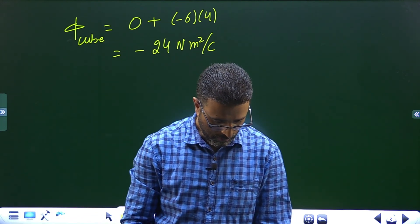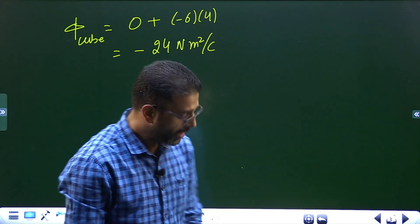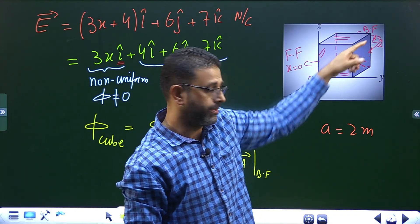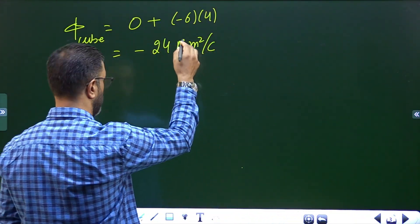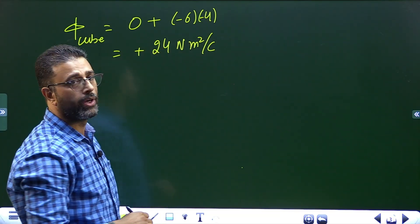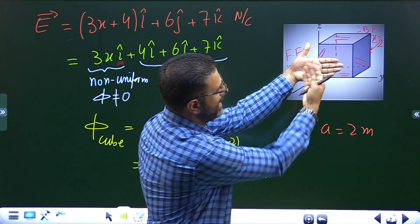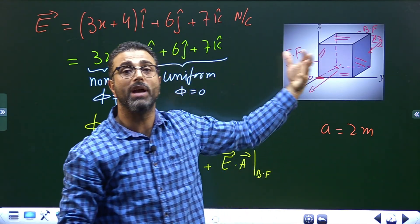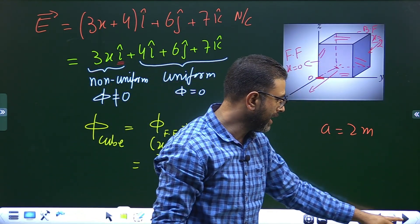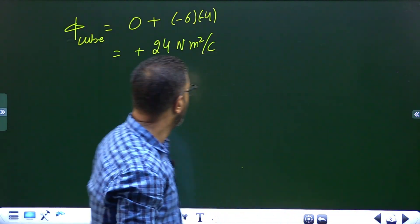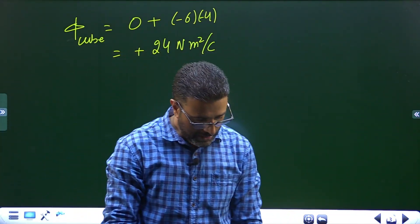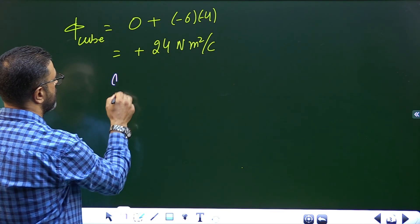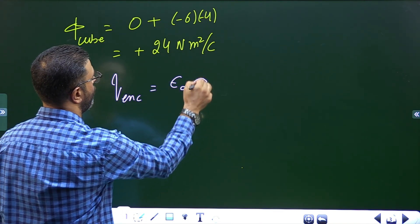Wait — the area vector for the back face points in the negative x-direction (outward normal), so the area is also negative. This gives (-6) × (-4) = +24 N·m²/C. Remember, the outward normal for the back face points in the negative direction. So flux through the cube is +24 N·m²/C. By Gauss's law, charge enclosed equals ε₀ × flux.